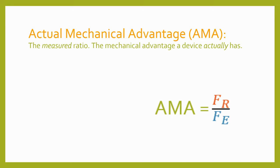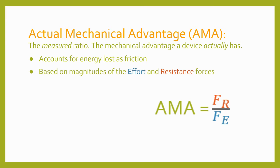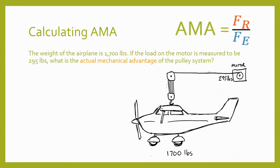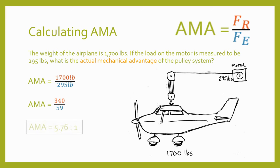The actual mechanical advantage of a simple machine is the measured ratio — it's the mechanical advantage the device actually has. Actual mechanical advantage, or AMA, accounts for energy that's lost along the way in the form of friction, and is based on the magnitudes of the effort and resistance forces. The weight of the airplane is 1,700 pounds. If the load on the motor is measured to be 295 pounds, the AMA equals the measured resistance force over the measured effort force: 1,700 over 295, which simplifies to an actual mechanical advantage of about 5.76 to 1.